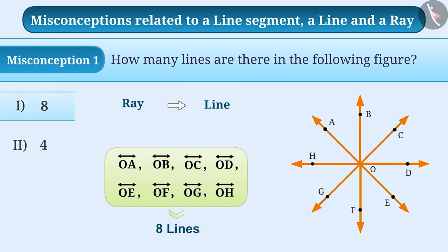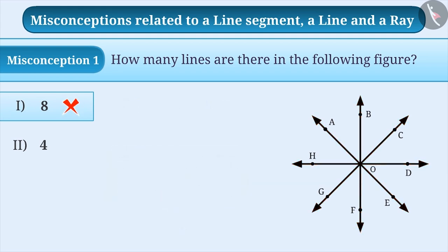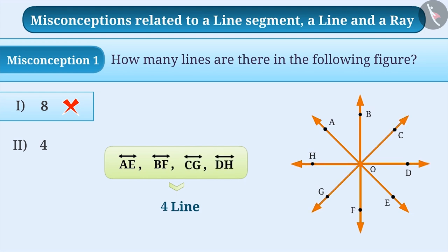With this understanding, they choose option 1 which is an incorrect answer. The correct answer is that there are 4 lines in the given figure such as line AE, line BF, line CG and line DH. Therefore, the correct answer is option 2.